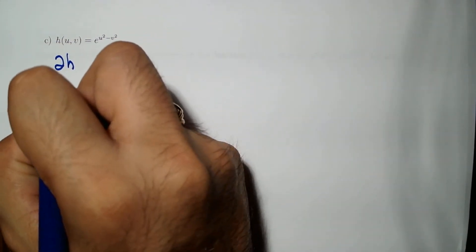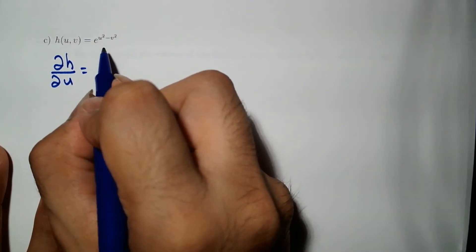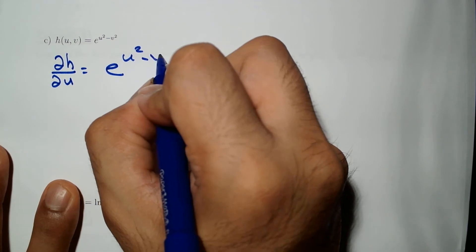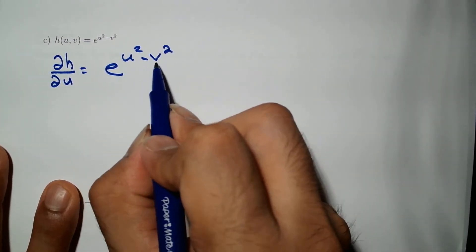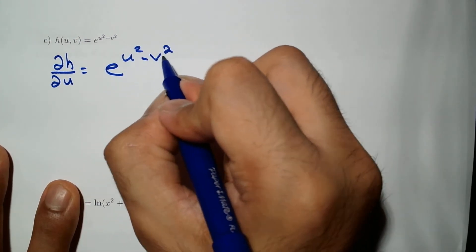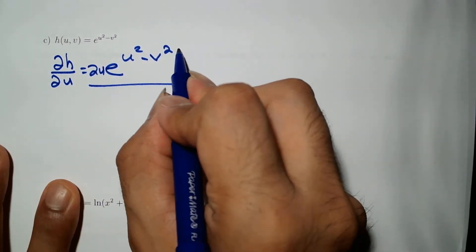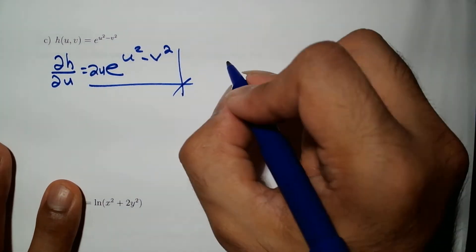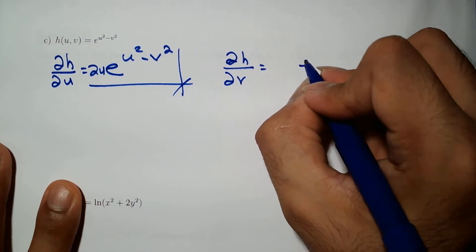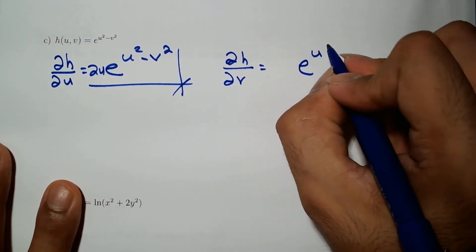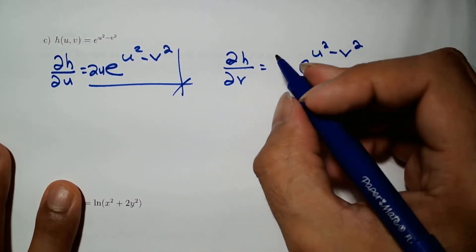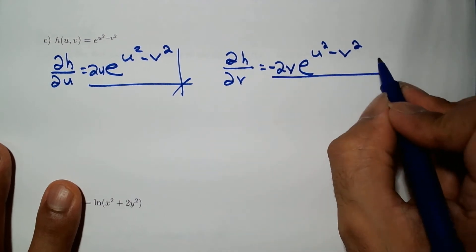For example 5, h(u, v) = e^(u² - v²): the partial with respect to u uses the mini chain rule — the exponential stays the same and we multiply by the derivative of the exponent with respect to u, which is 2u. The partial with respect to v similarly gives e^(u² - v²) times -2v.